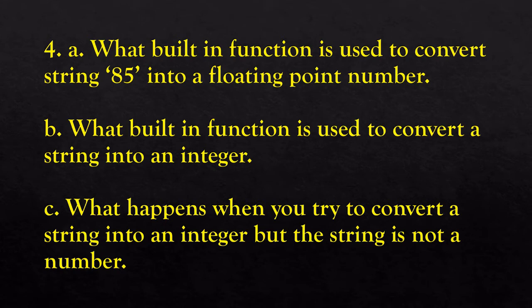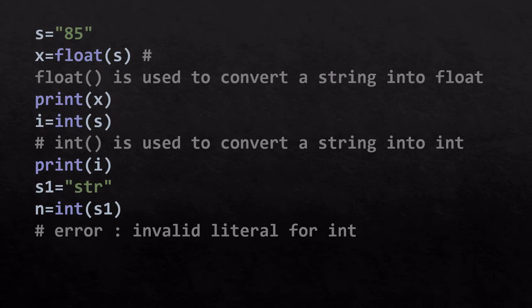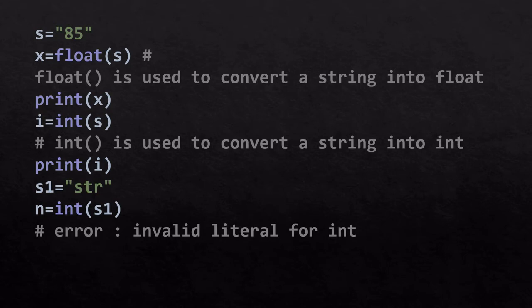Question four: what built-in function converts the string '85' into a floating point number, and what converts it into an integer? Here s = '85' is in double quotes, so it is a string. To convert it to float, use the float function: float(s) will convert the string to 85.0. To convert it to integer, use int(s) which returns 85.